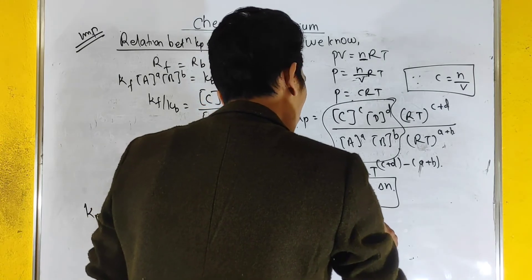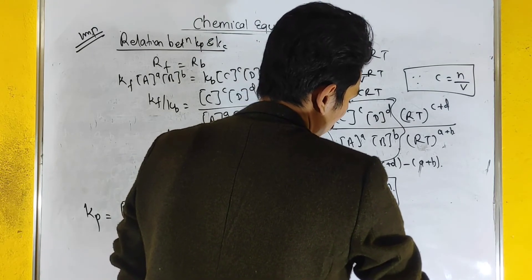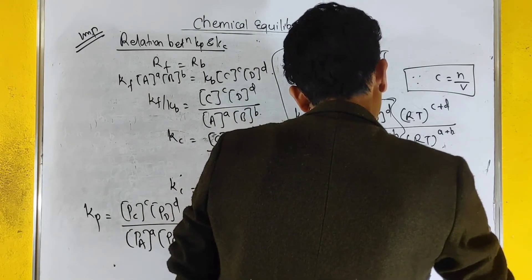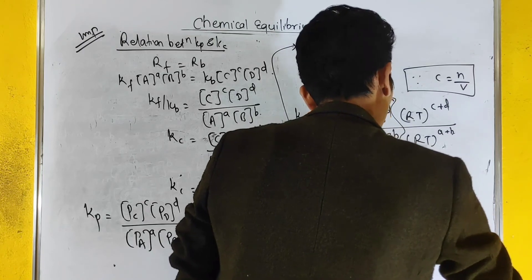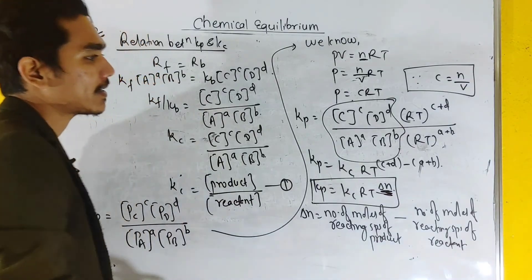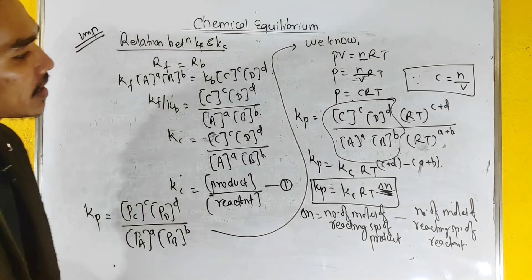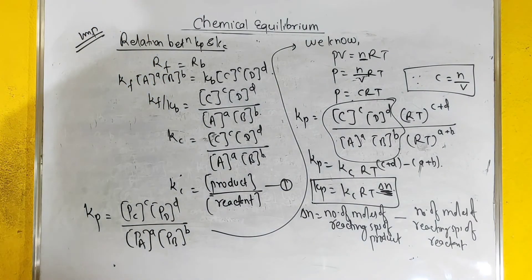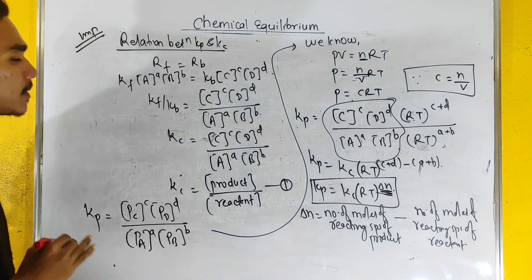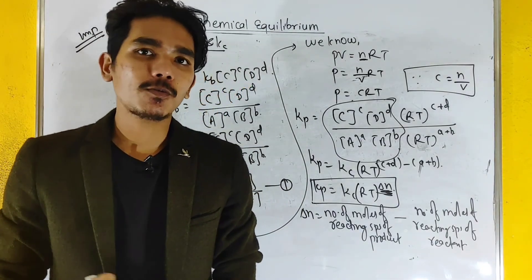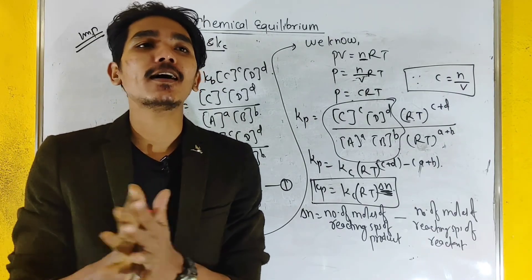Delta N is the number of moles of gaseous products minus the number of moles of gaseous reactants. That is, ΔN = (c + d) − (a + b). Here, R is the universal gas constant and T is the absolute temperature. This is the relationship between K_p and K_c from the law of mass action. Thank you very much.